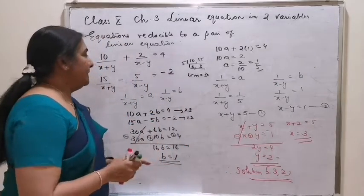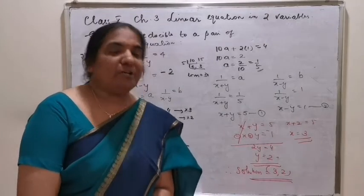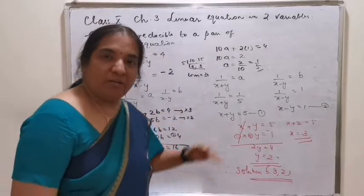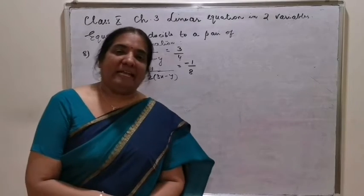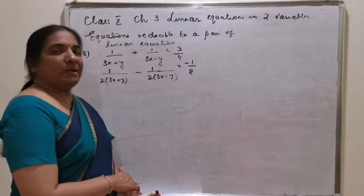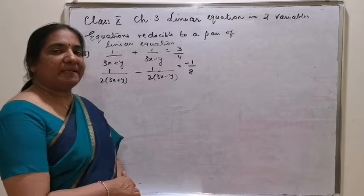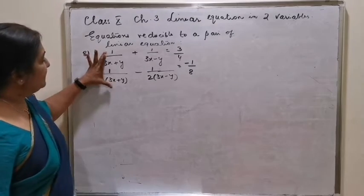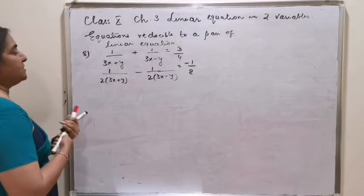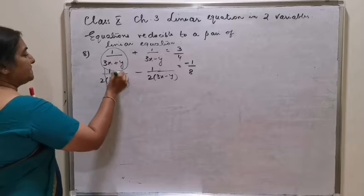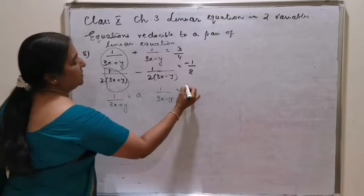The steps are: guess the substitution for 1 by x plus y and 1 by x minus y. This type of equation is also involved in word problems, which is why it is a special method of solving by reducing to a pair of linear equations. Number 8: 1 by 3x plus y plus 1 by 3x minus y is equal to 3 by 4, and 1 by 2 into 3x plus y minus 1 by 2 into 3x minus y equals minus 1 by 8. Let 1 by 3x plus y equal A and 1 by 3x minus y equal B.